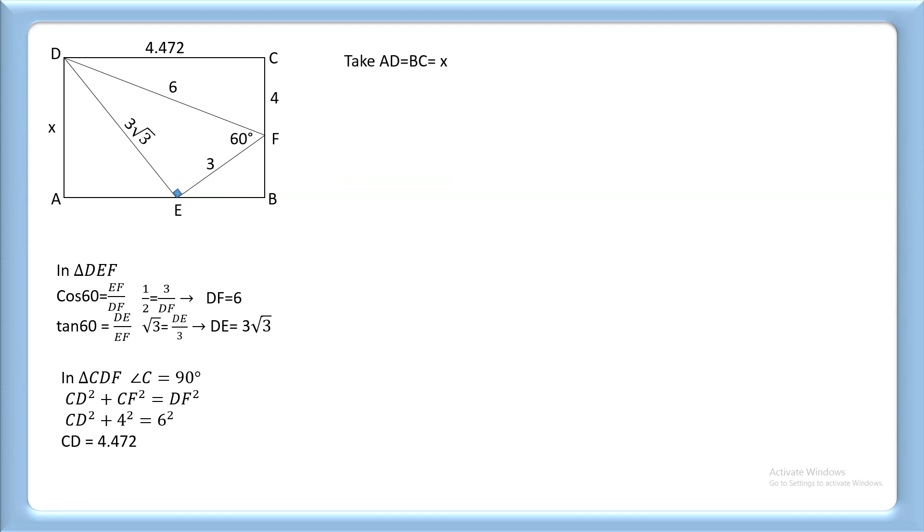Now take AD equals BC equals x. Therefore, BF equals x minus 4. If we take angle ADE equal to θ, and since angle DAE equals 90 degrees, we can establish the angle relationships.